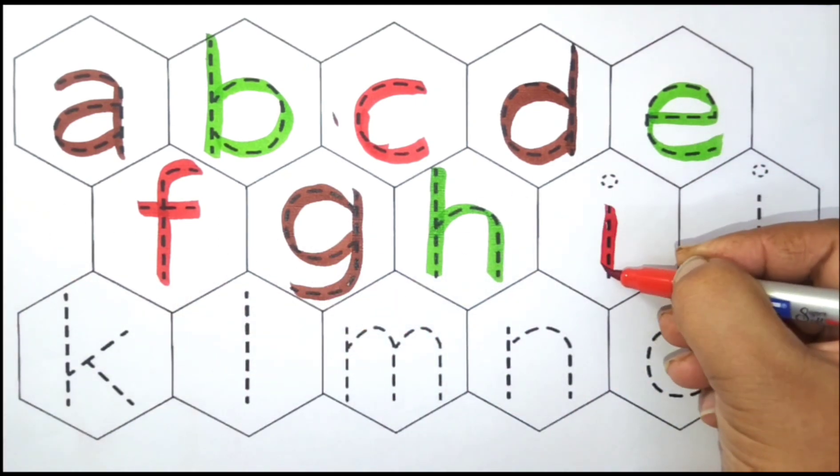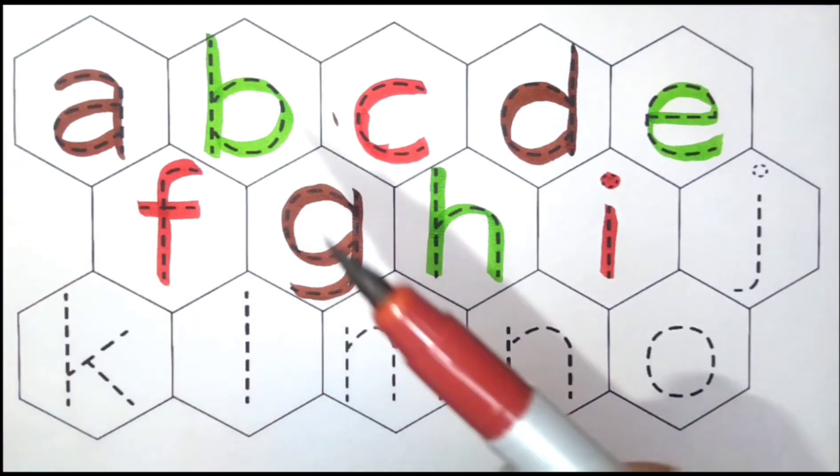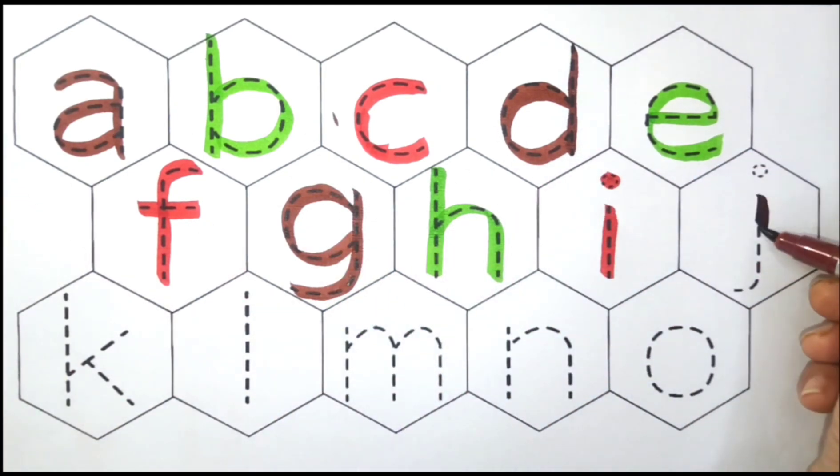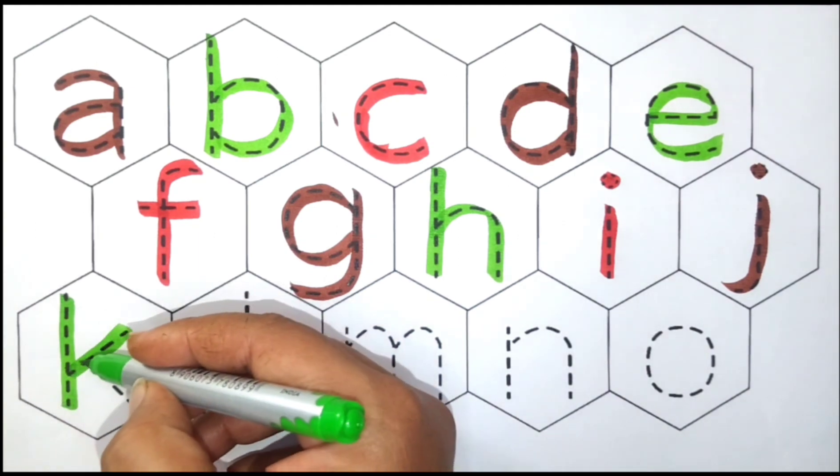Red color, I, I4, Ice cream. Brown color, J, J4, Jug. Green color, K, K4, Kite.